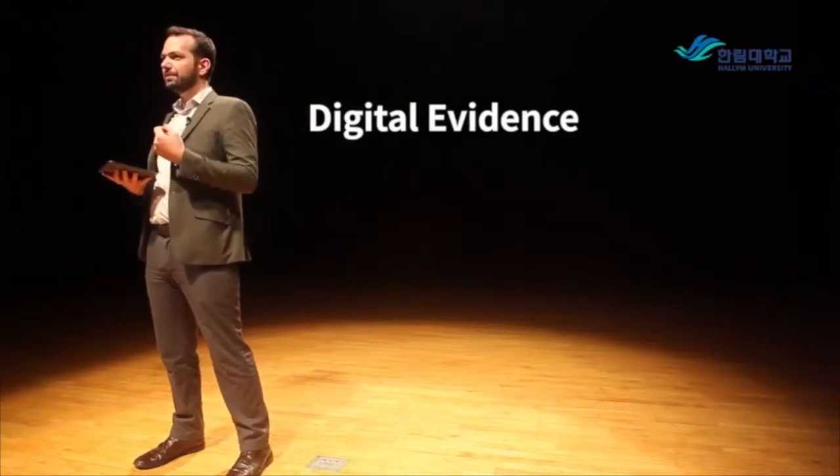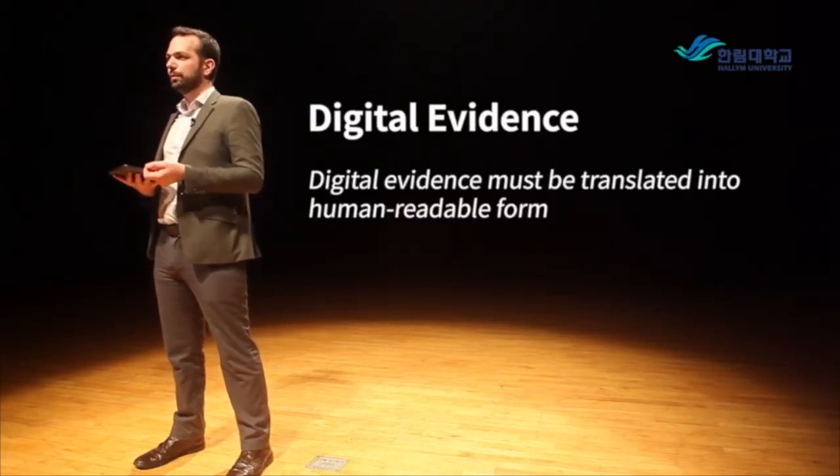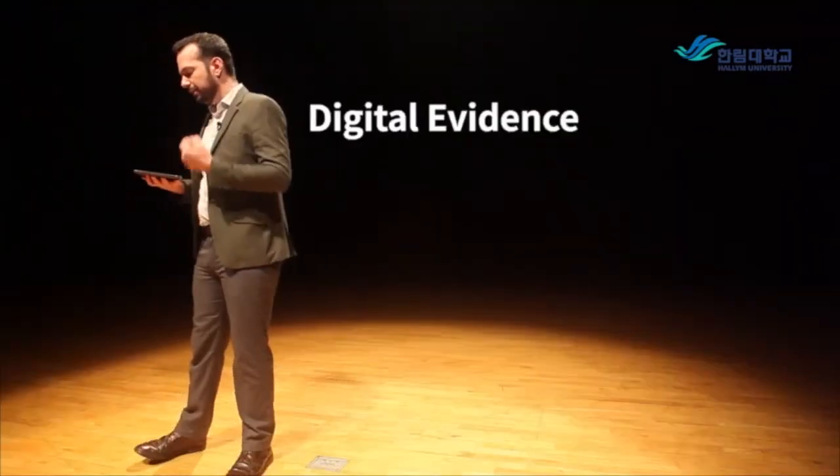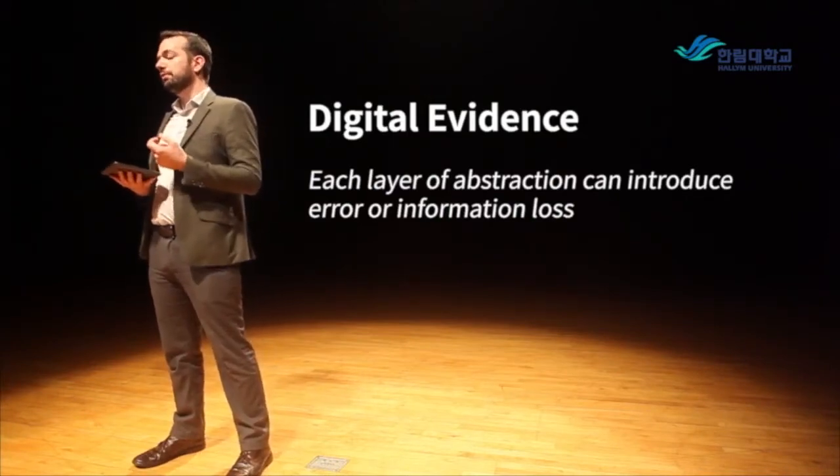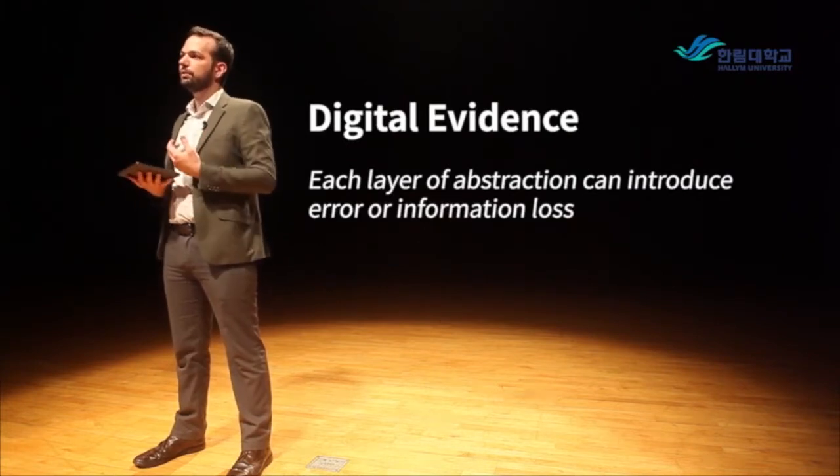Digital evidence must be translated into human-readable form. The fact that we can't touch it means we can't observe it directly — we have to go through a translation process first. Think of it like languages: we have data in a certain form, and before we can make sense of it, it must be converted into a form humans can read and understand. Each layer of abstraction can introduce information loss. In computers, we start at the physical layer — electronic signals or magnetic fields — convert those into ones and zeros, then into a data structure, and finally make sense of what the data is actually telling us.